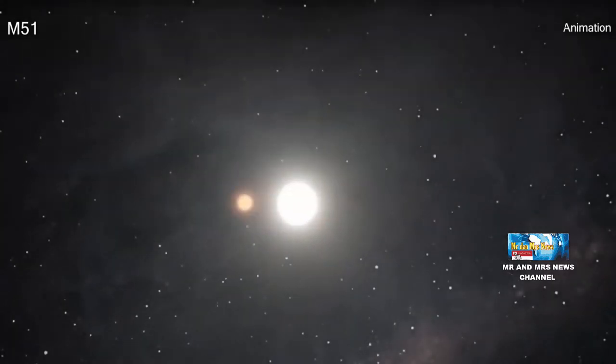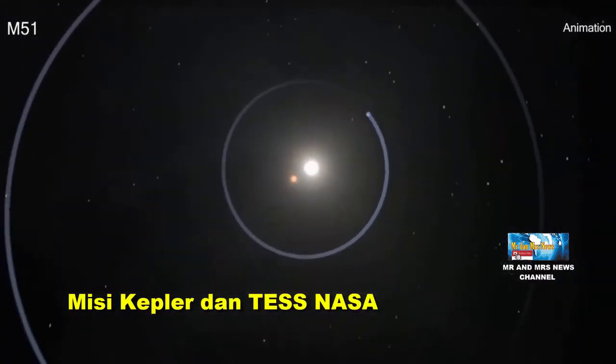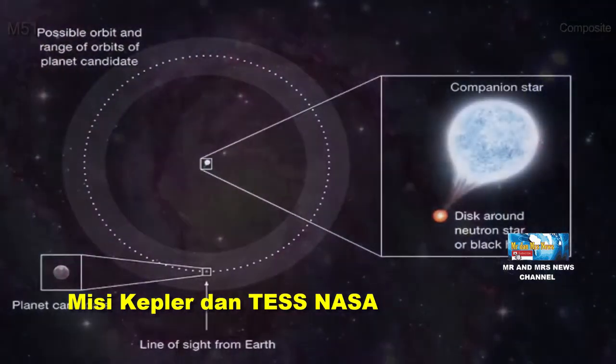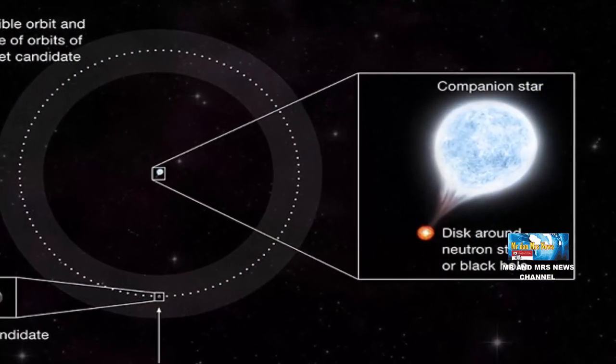Para astronom yang menggunakan teleskop berbasis darat dan luar angkasa seperti yang ada di Misi Kepler dan TESS NASA disebut telah mencari penurunan cahaya optik, radiasi elektromagnetik yang dapat dilihat manusia, memungkinkan penemuan ribuan planet.